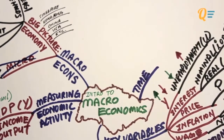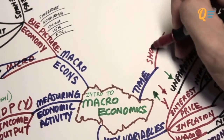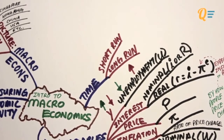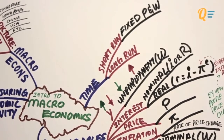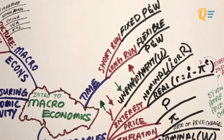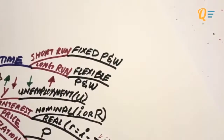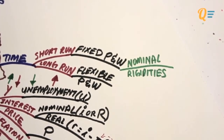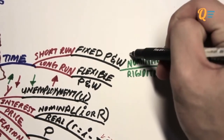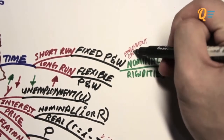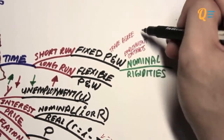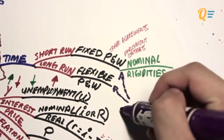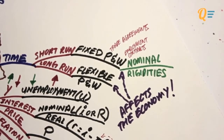Let's spend a little time talking about time horizons. In the short run, certain variables are fixed — specifically the price level and wages. In the long run, when prices and wages become flexible, you have very different economic analysis. When prices and wages are fixed, this is called nominal rigidities. The reason prices and wages remain fixed in the short run may be because of employment contracts and trade agreements — they may be locked in for a certain period of time.